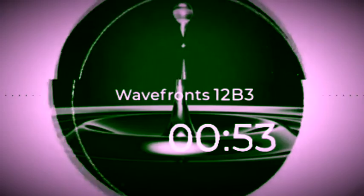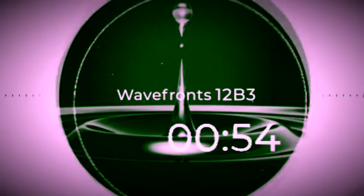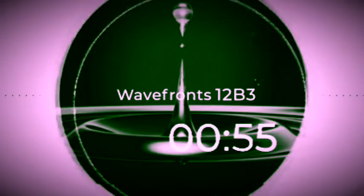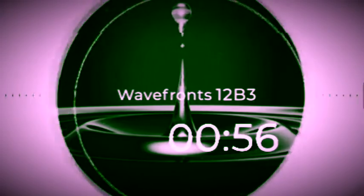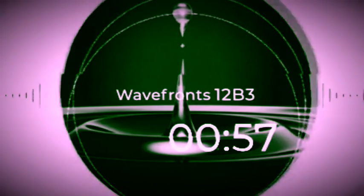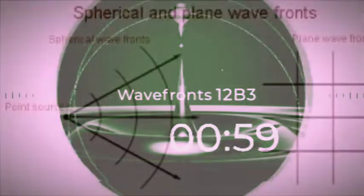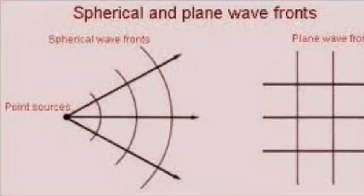The shape of the wavefront depends upon the nature of the source. A point source will emit waves having circular or spherical wavefronts, while a large extended source will emit waves whose wavefronts are effectively plane or flat.